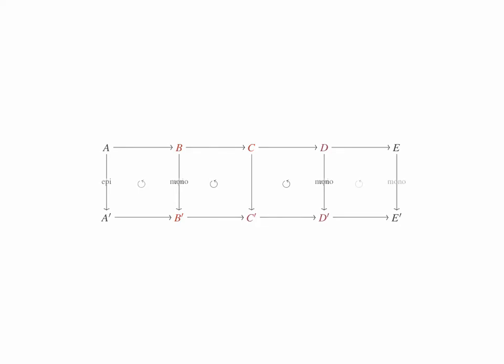Dually, if we assume that the top row is exact at D, and the bottom row is exact at C' and D', and that the centre-left and centre-right and far-right squares commute, and that the vertical maps from B to B' and D to D' are epimorphisms, and the vertical map from E to E' is a monomorphism, then we can deduce that the vertical map from C to C' is an epimorphism.